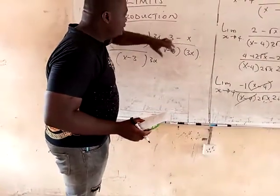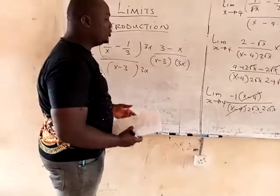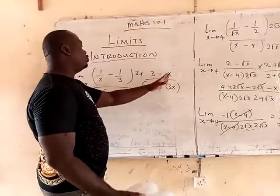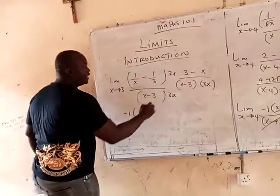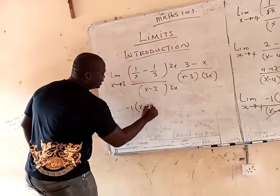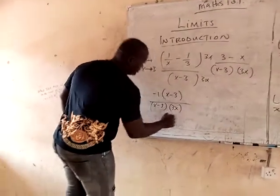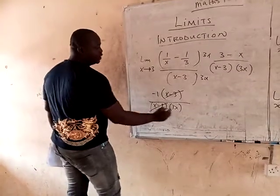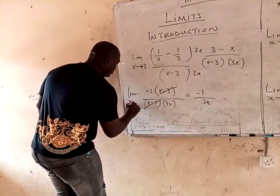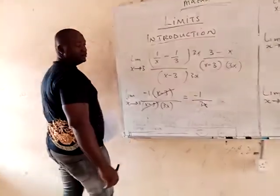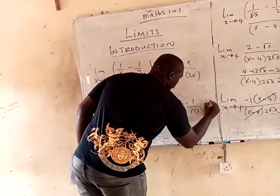Now, the next thing: you can see that we have 3 minus s, but we can make it look exactly the same as s minus 3. What are we going to do? Factor out minus 1. Like I did in the other example — we want to factor out minus 1. Whenever you factor out minus 1, you have minus 1 times x minus 3, right? All into 3s. So this will cancel this. Then you'll be left with minus 1 all over 3s. And remember, you have a limit of s equals 3. So all I have to do is substitute the value of 3. So you're left with minus 1 over 9.